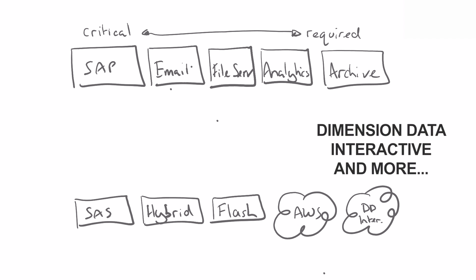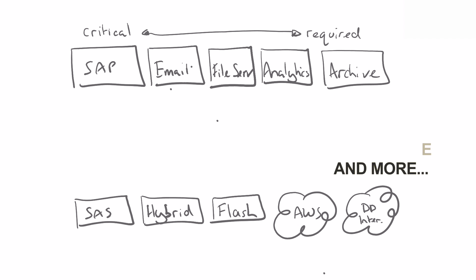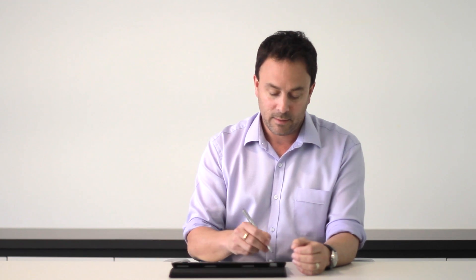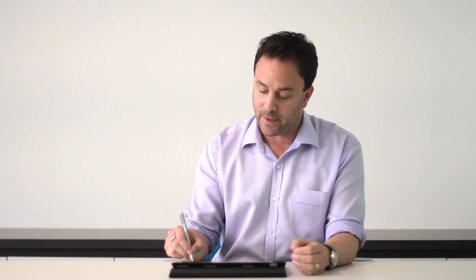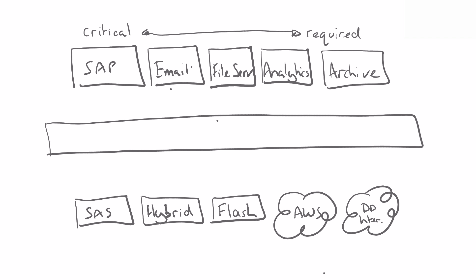So we have a range of platforms and a range of applications. This is what Data ONTAP provides in terms of this data fabric, because it glues these things together. It enables you to run clustered Data ONTAP and connect the various application workloads you have to the fabric, and then connect the various storage media that makes sense to you to the fabric. In this particular example you're running hybrid, Flash, and AWS workloads.